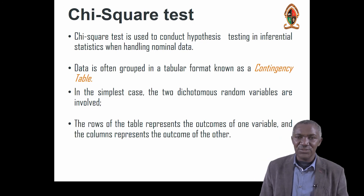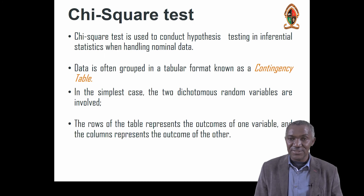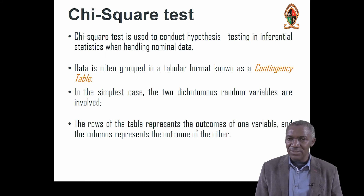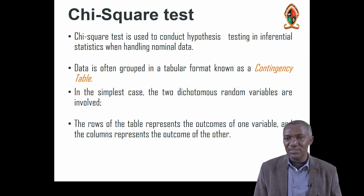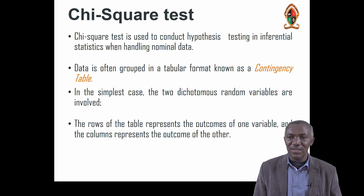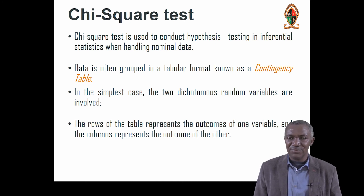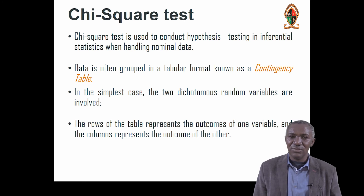Chi-square test is used to conduct hypothesis testing in inferential statistics. We broadly classify statistics into descriptive, where we do measures of central tendency such as the mean, the median, and the mode. Under descriptive statistics, we also describe variability or variance in the data, covering the range, the variance, and standard deviation.